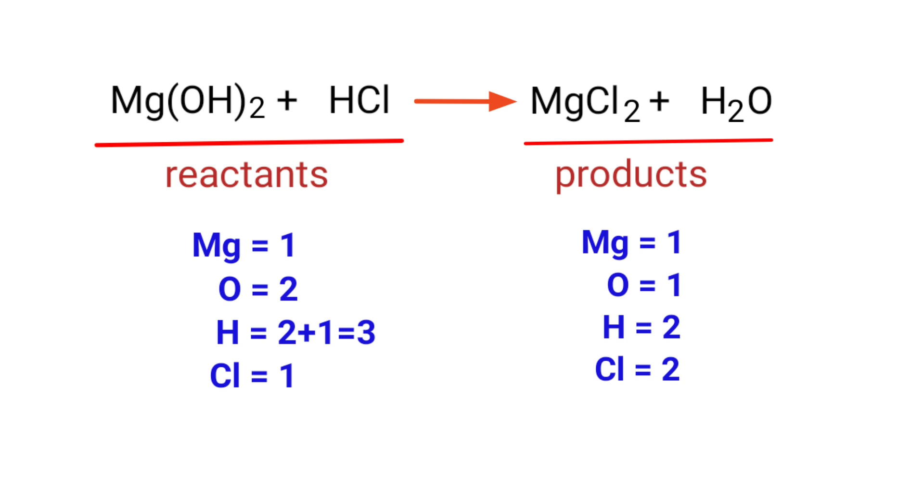In the reactants side there are one Magnesium atom, two Oxygen atoms, three Hydrogen atoms, and one Chlorine atom present. On the products side there are one Magnesium atom, one Oxygen atom, two Hydrogen atoms, and two Chlorine atoms present.